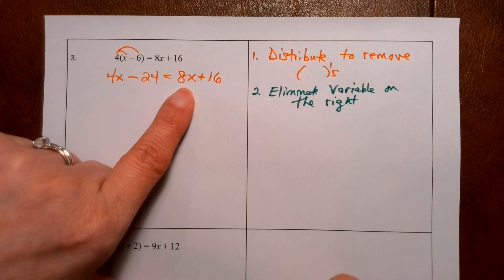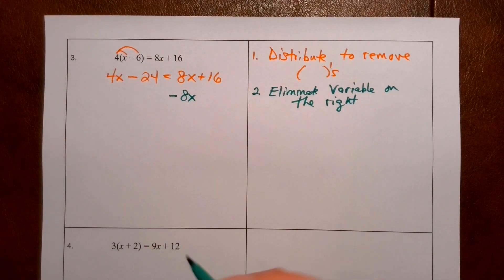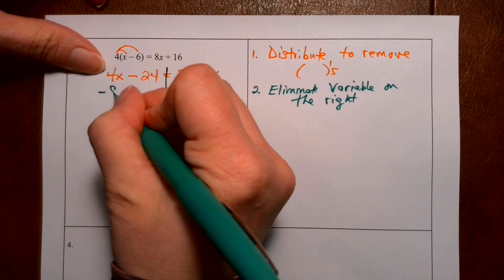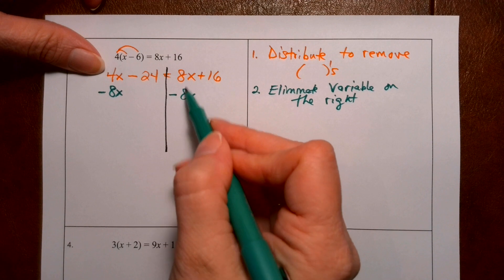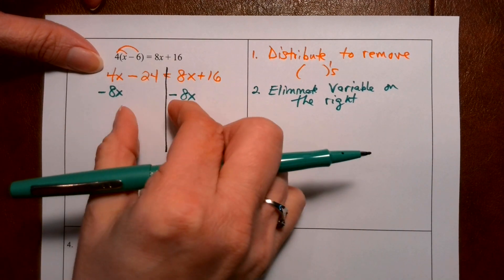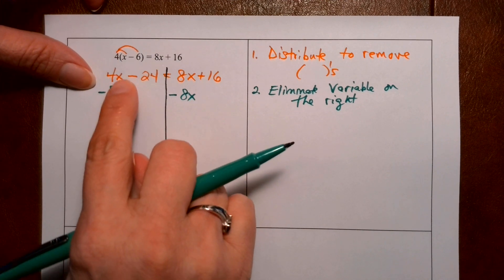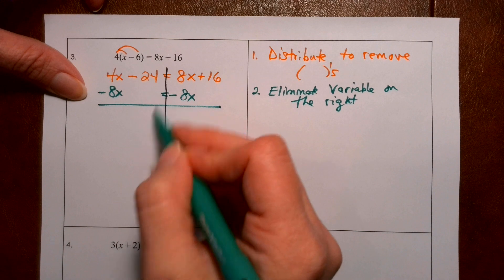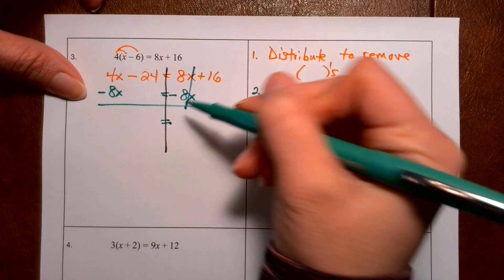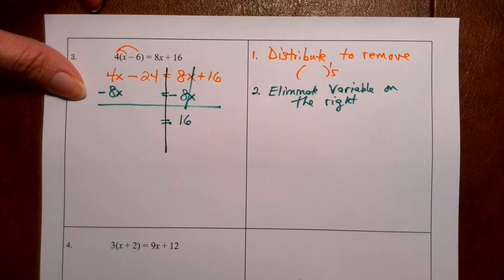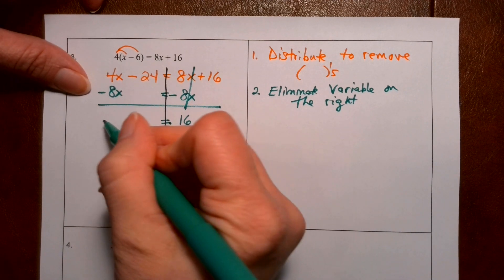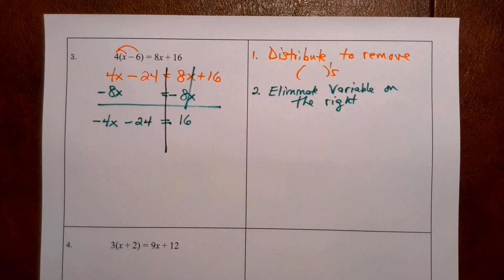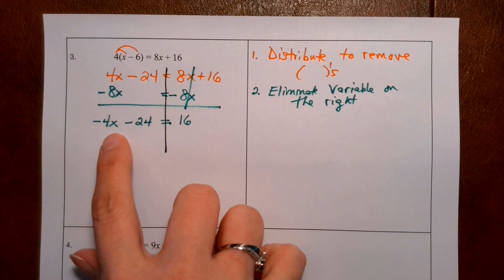How am I going to eliminate an 8x? I will subtract 8x from the right, and I need to subtract 8x from the left as well. I'm putting x's under x's — it makes sense to line up the like terms. After doing that, the 8x's are gone and all we have left is 16 on the right side. On the left, 4 minus 8 gives negative 4x, and we still have minus 24.